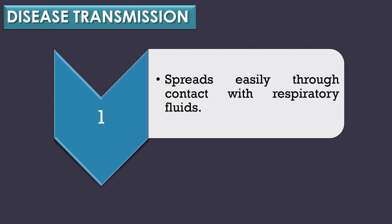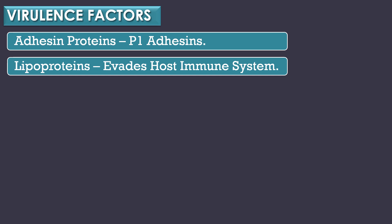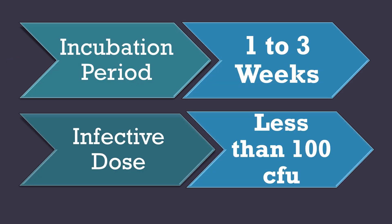Disease transmission: Mycoplasma pneumoniae causes respiratory infection that spreads easily through contact with respiratory fluids. Virulence factors: the ability of microorganisms to cause an infection or disease is called virulence, a term first coined by Louis Pasteur. Mycoplasma pneumoniae has two virulence factors: the first is adhesin proteins, also called P1 adhesins, and the second is lipoproteins, which evade the host immune system. The incubation period is 1 to 3 weeks, and the infective dose required for causing an infection is less than 100 CFU.